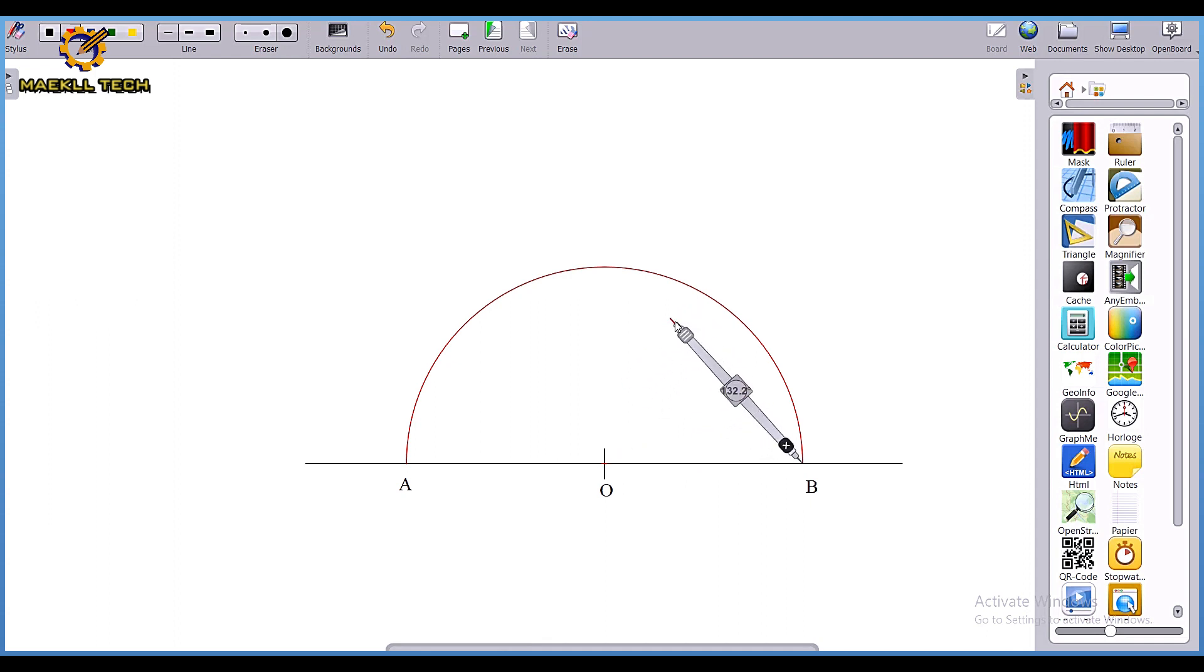Then I'm going to draw an arc. Don't extend the length of the compass - just maintain the same length you used to draw your semicircle. This arc cuts my semicircle at this junction.